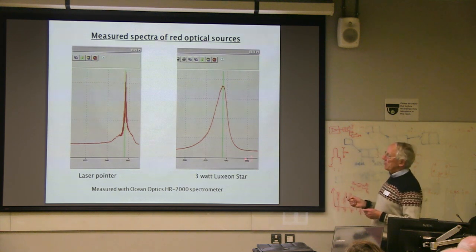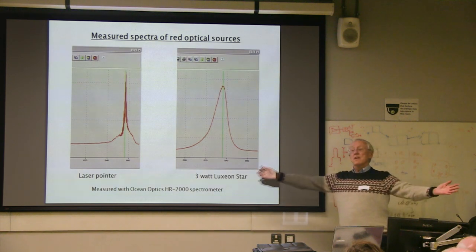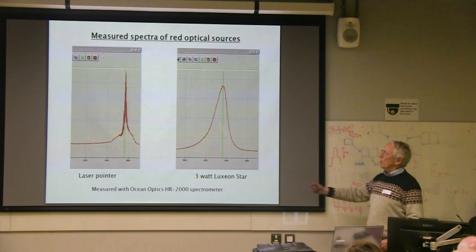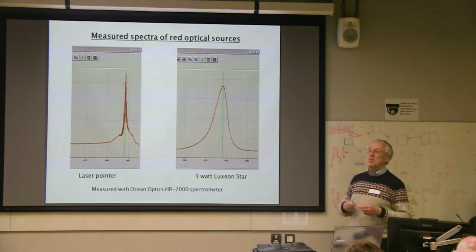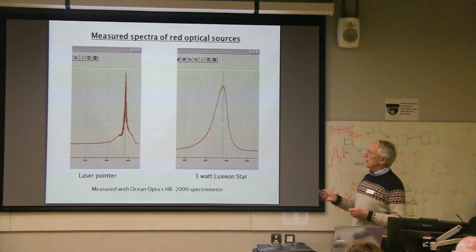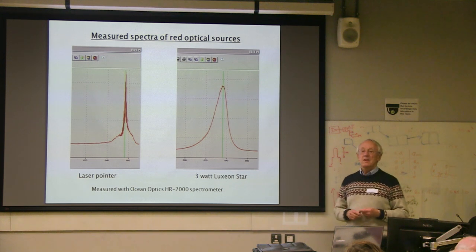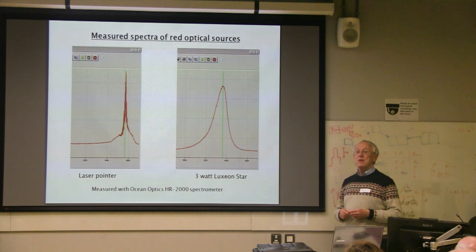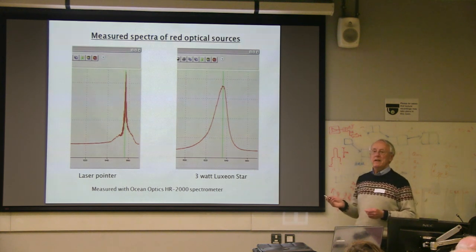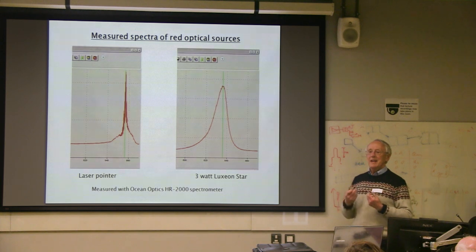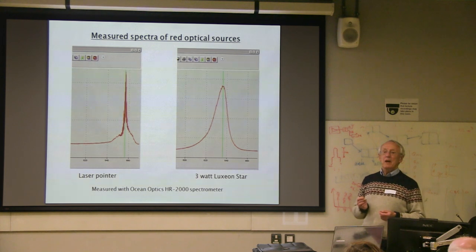Looking at a standard LED you can see the curve width is very much broader. Within that bandwidth you could probably transmit all the bandwidth you'd ever require — probably thousands of gigahertz. So we're not really worried about narrowband versus wideband in that sense, and we also have to think about the way in which we collect light.